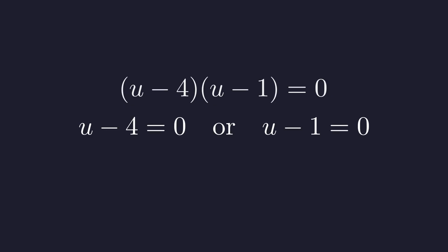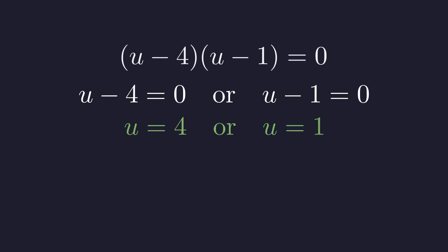For this product to equal 0, at least one factor must be 0. So either u minus 4 equals 0 or u minus 1 equals 0, which means u equals 4 or u equals 1.